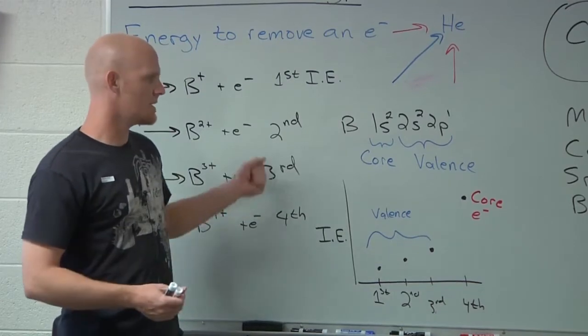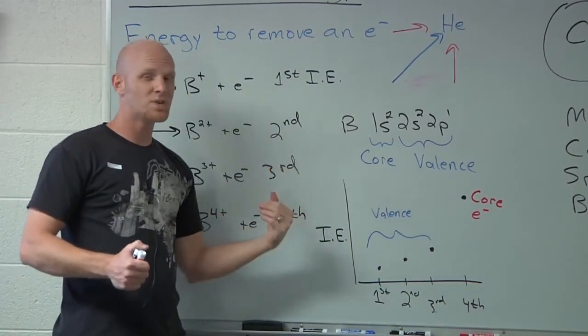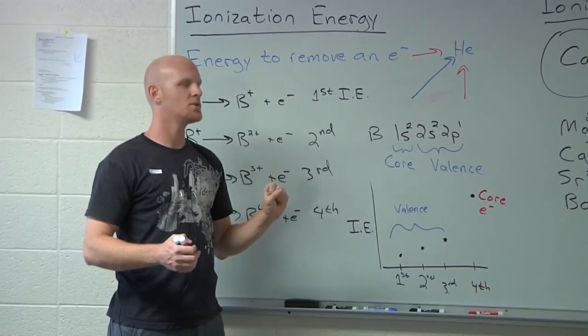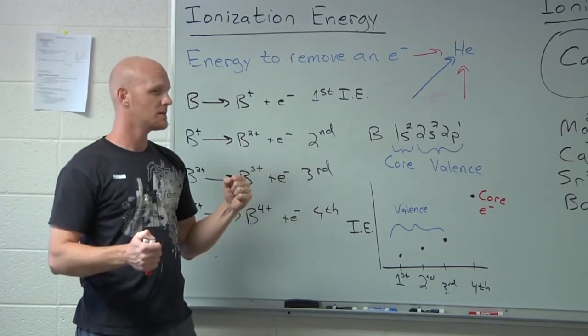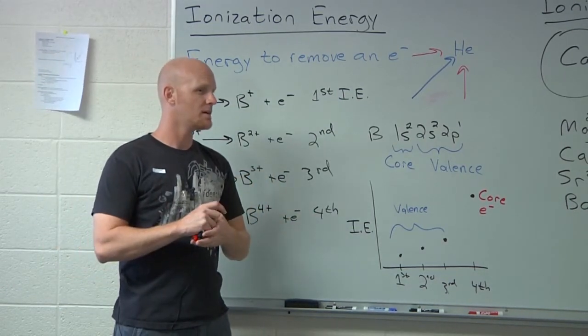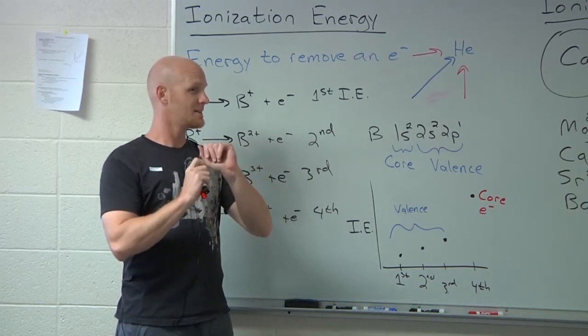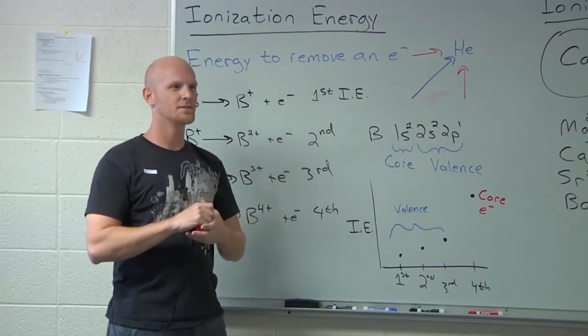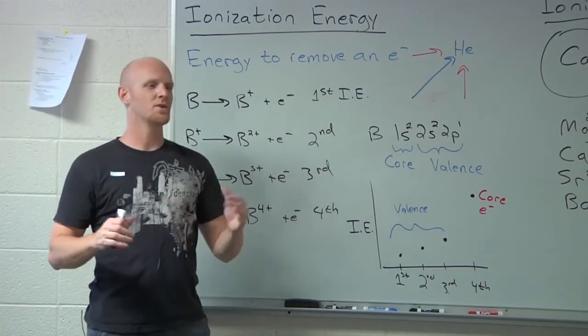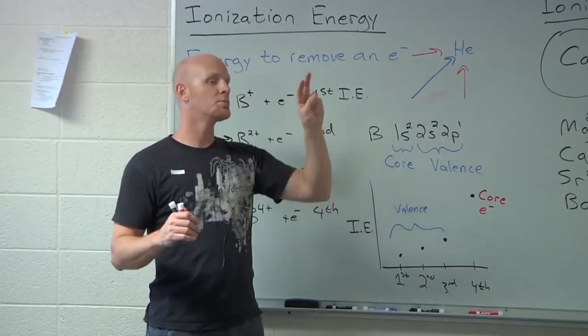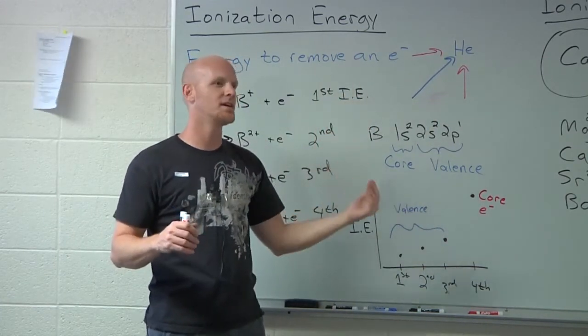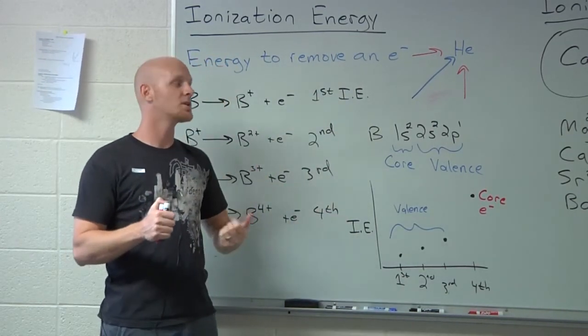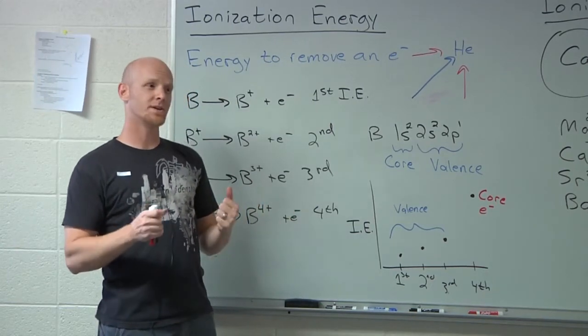The other way you might see this show up is if I asked you to give me an element who has a really high second ionization energy. If I want an element who has the highest second ionization energy, what can you imply? The alkali metals. Why the alkali metals? They only have one valence electron. By the time you pull out one, when you go to pull out the second one for alkali metals, you're going to have to take a core electron. You'd be looking for one of the alkali metals as your answer. Also a really common question on the test.